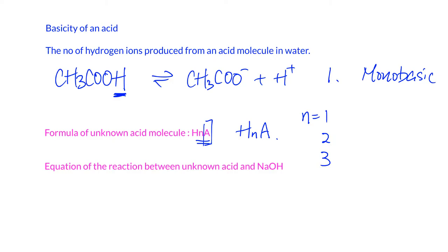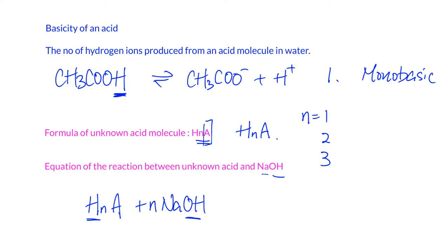When we write an equation between HₙA, the unknown acid, and NaOH, we can write it this way. Because if we have one H, we need one OH; if we have two H, we need two OH. Therefore, the ratio between the acid and NaOH will be 1 to n. So with these mole ratios or coefficient ratios, we can do the math more easily.